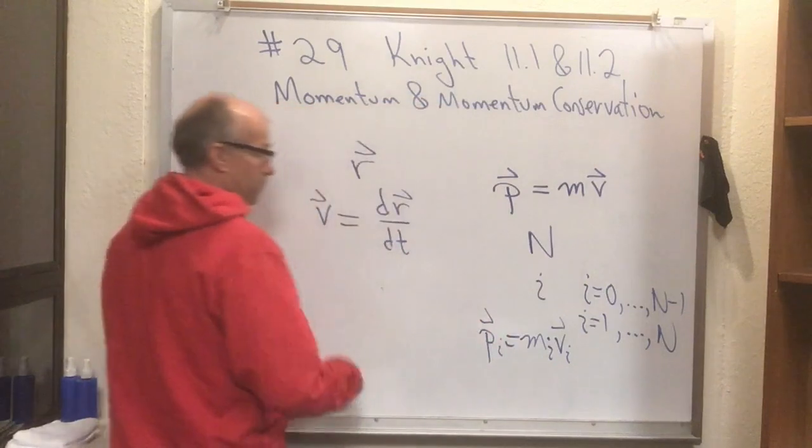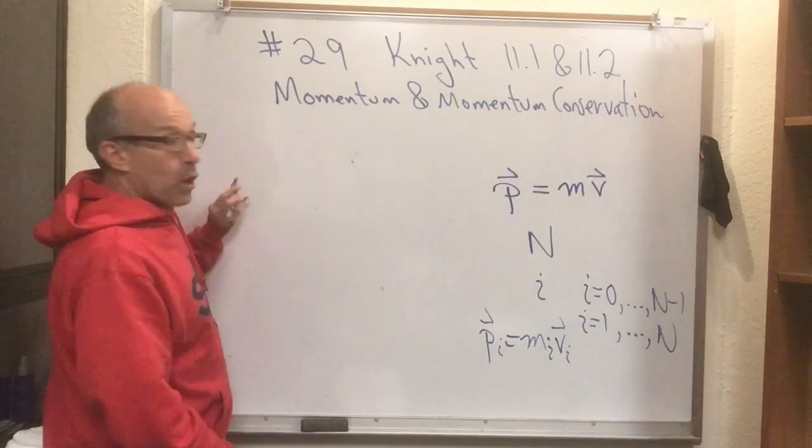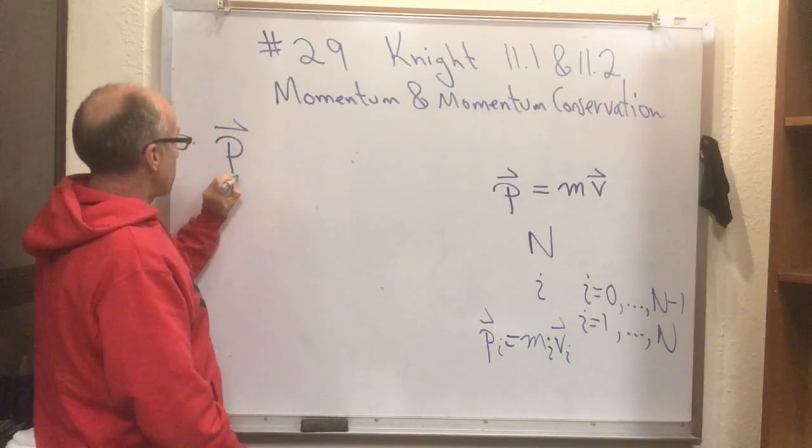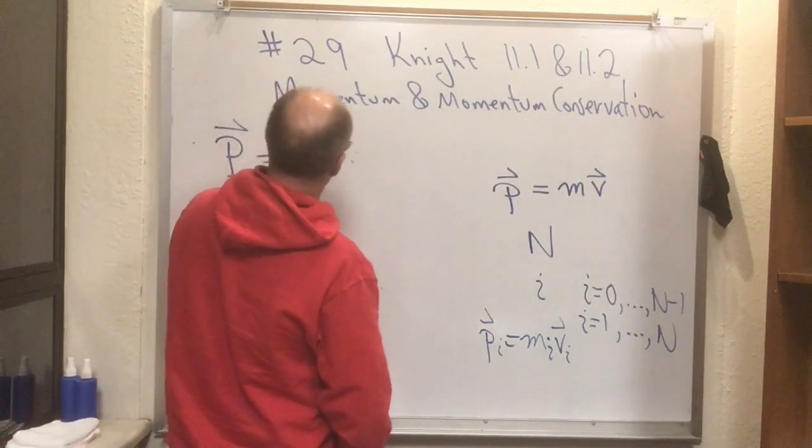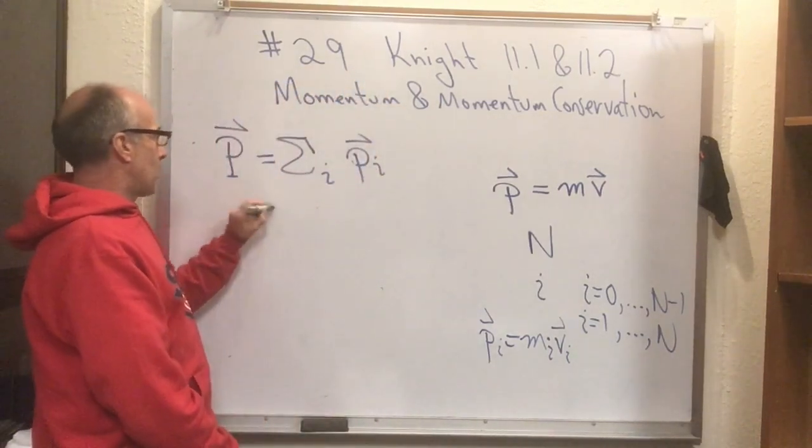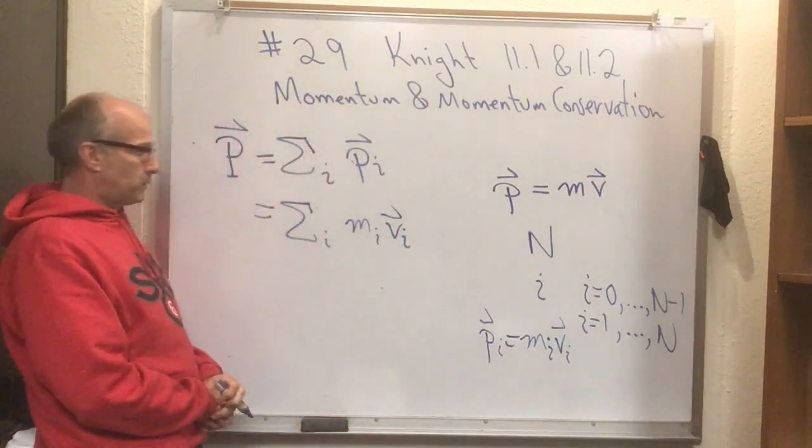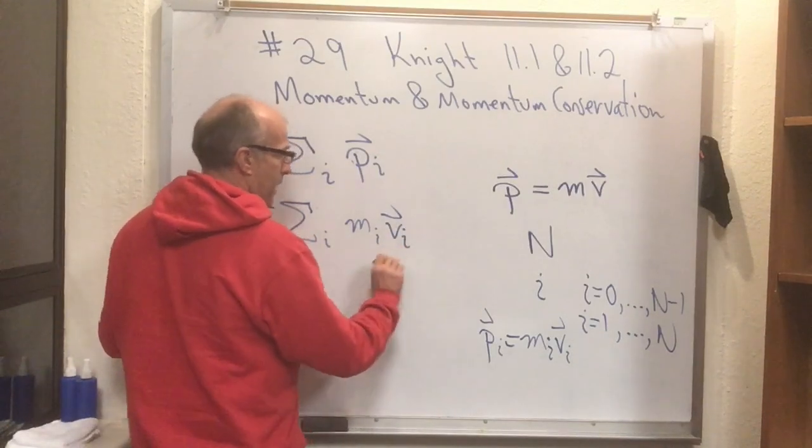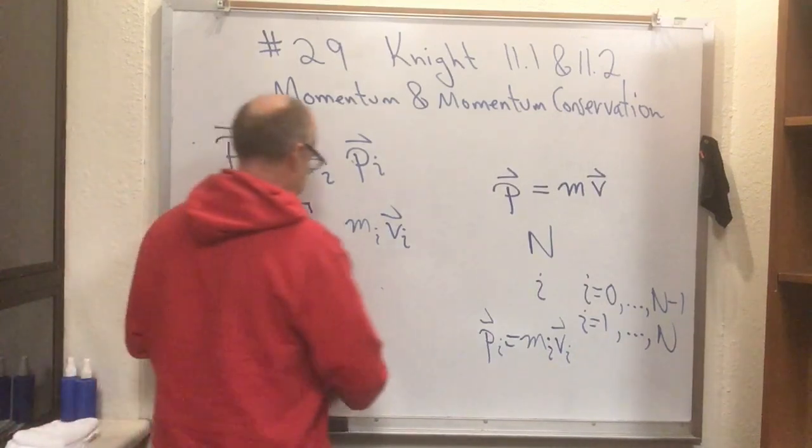Now, if you have a system that has n particles in it, we can define the total momentum of the system, capital P. Capital P is equal to the sum over i of little p sub i. Or if you want to write that out, it's the sum over i of m_i v_i. Where this i is not a component or anything like that. This i here is running over all the particles in the system.